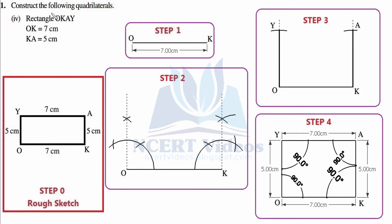Question number one: construct the following quadrilaterals. Chapter name: Practical Geometry. We are on the last part, that is the fourth part of Exercise 4.3, Chapter 4. In this case we have to construct a rectangle whose name should be OKAY. We are given two pieces of information, so let's check the data first.